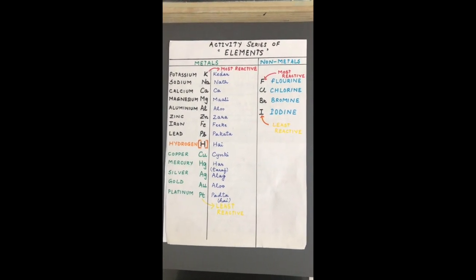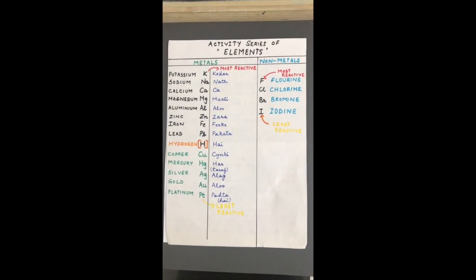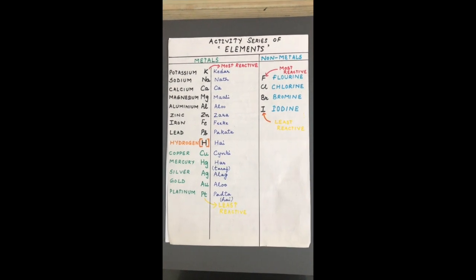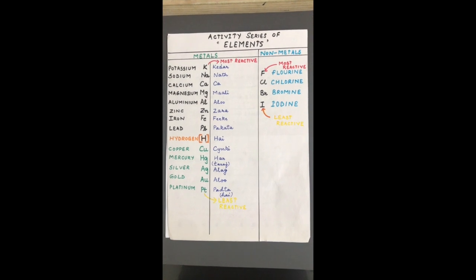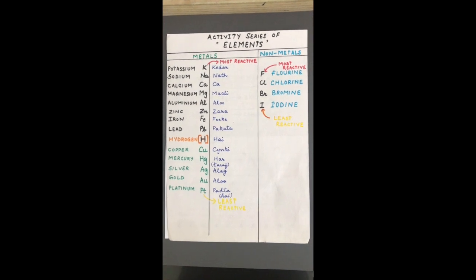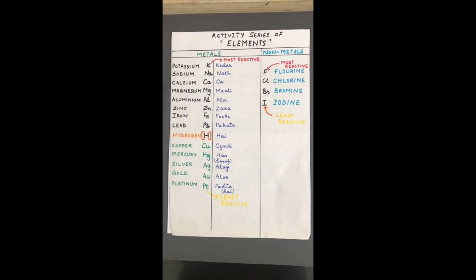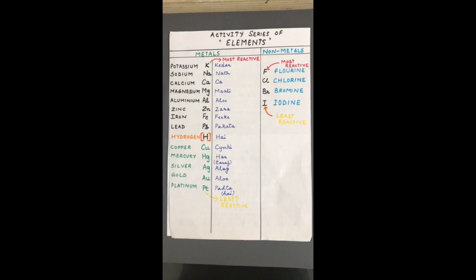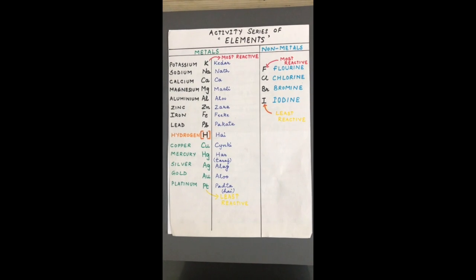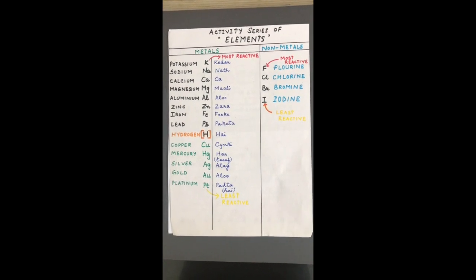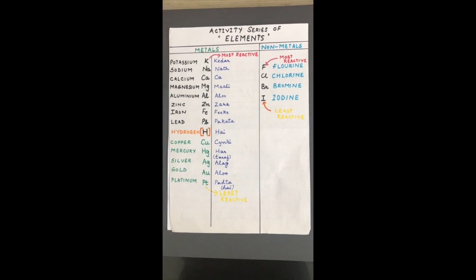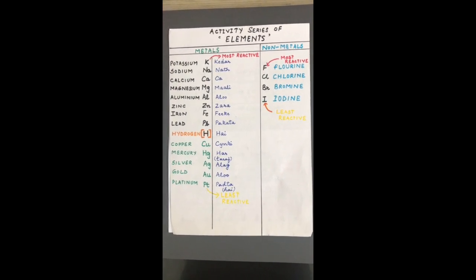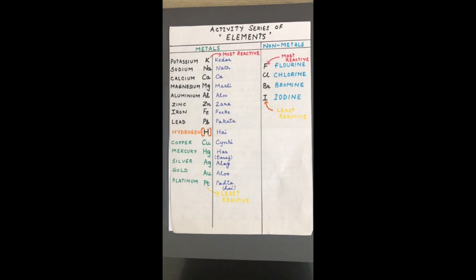Hello students, today we are going to study displacement reactions. But before we do that, let us begin with what is the activity series of elements. You can see a series of metals and nonmetals right in front of you. This is the activity series of elements — a series in which elements are arranged in the order of their decreasing reactivity.